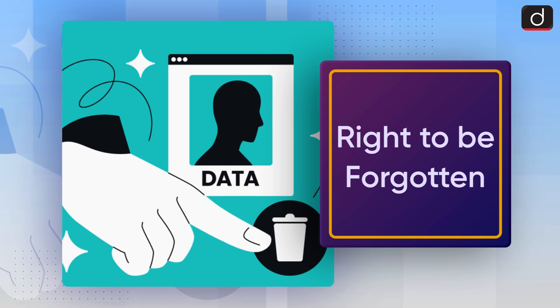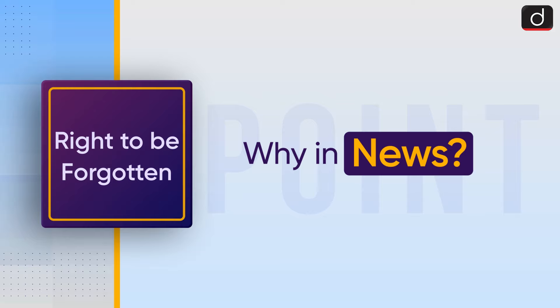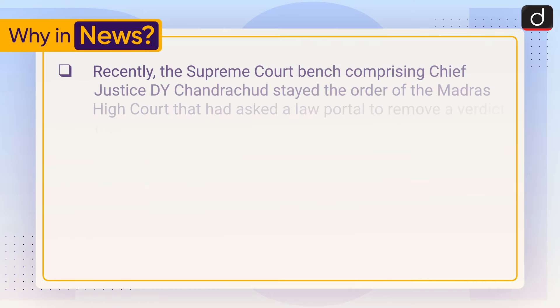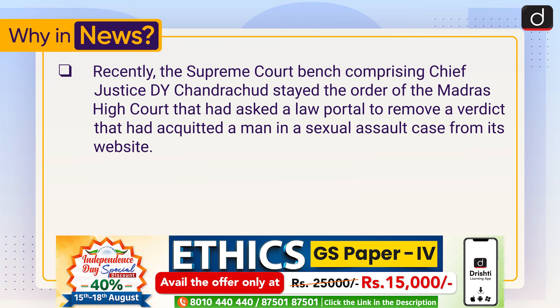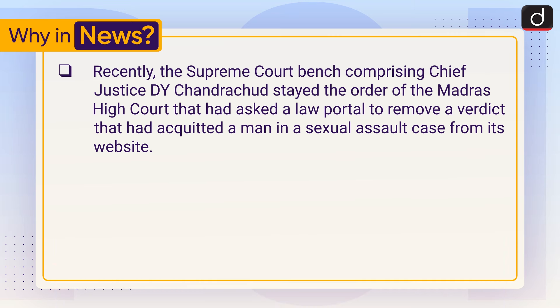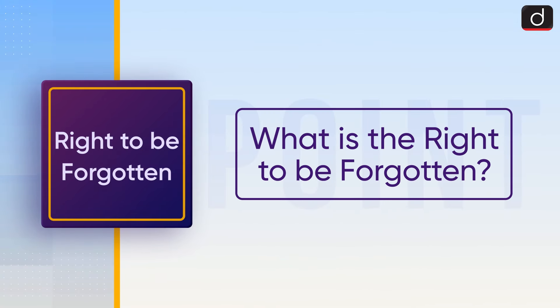Welcome to another episode of 'To The Point.' Today's topic is the right to be forgotten. Recently, the Supreme Court bench comprising Chief Justice D.Y. Chandrachud stayed the order of the Madras High Court, which had asked a law portal to remove a verdict that had acquitted a man in a sexual assault case from its website. The bench agreed to examine the issue, which highlights the conflict between the right to be forgotten for an acquitted person and the public's right to be informed.